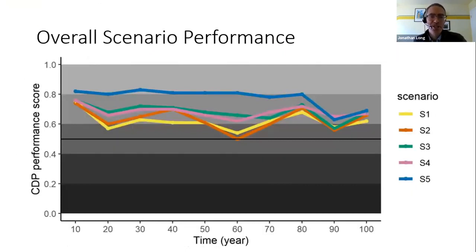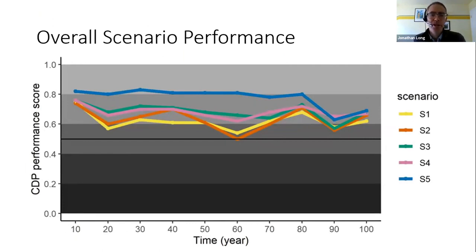Scenario five achieved many favorable outcomes in terms of vegetation and fire regime, and some potential downsides of using more fire were weighted relatively low. But there were certainly some areas flagged for managers to consider — including the number of days that would need intentional burning, which got pretty high and might face real social constraints.